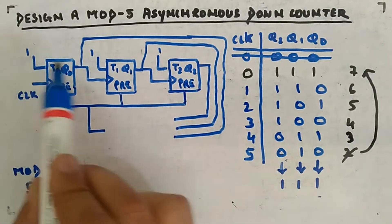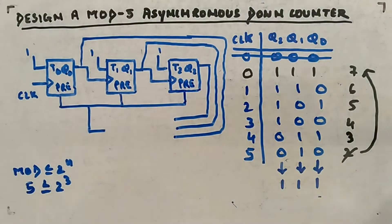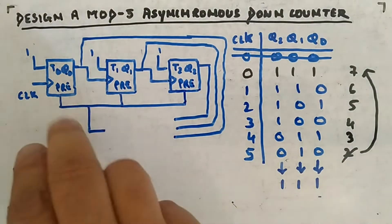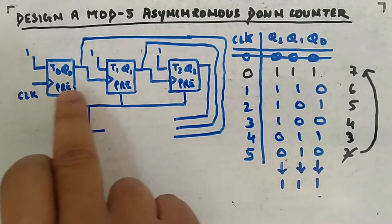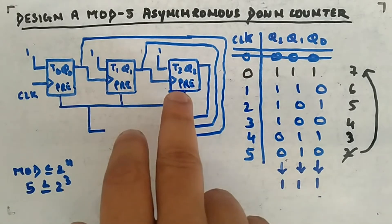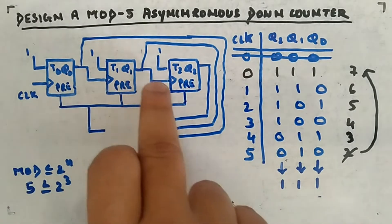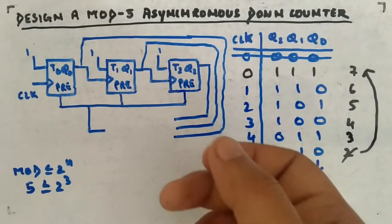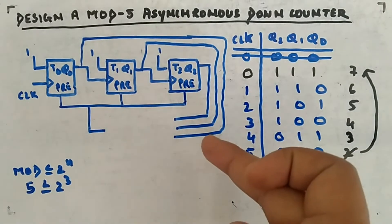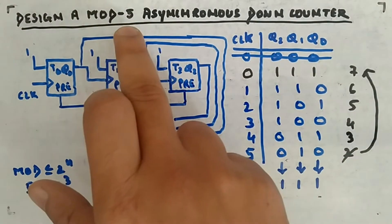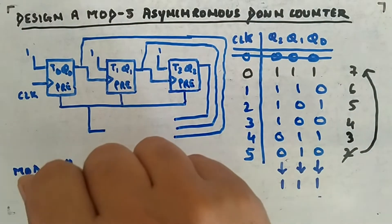All three are T flip-flops with input 1 in toggle state. I could have used JK flip-flops too — I'll use JK in the next example. Here you can see the arrangement: positive edge triggered flip-flops, and positive is connected to positive, so it's a down counter. I've taken some connections out so that we can make a mod-5 counter instead of mod-8.